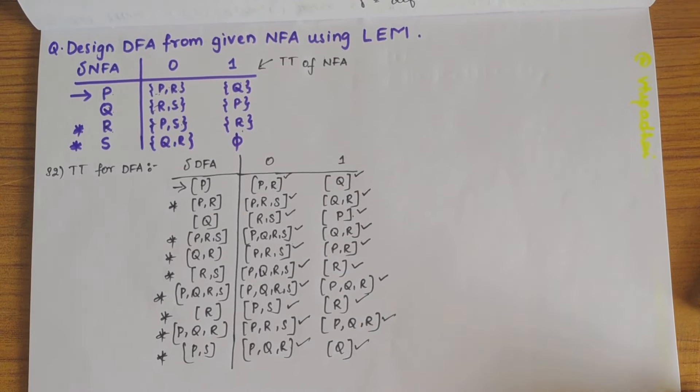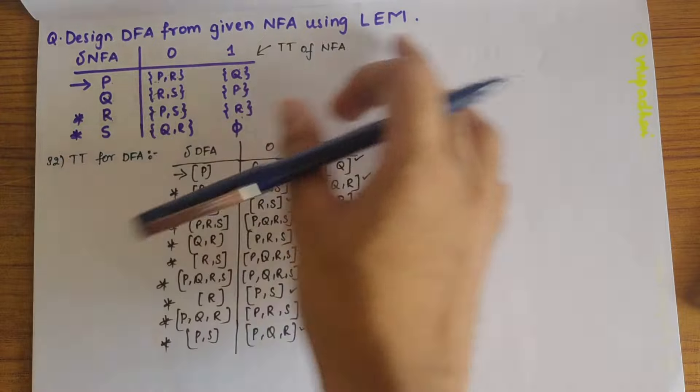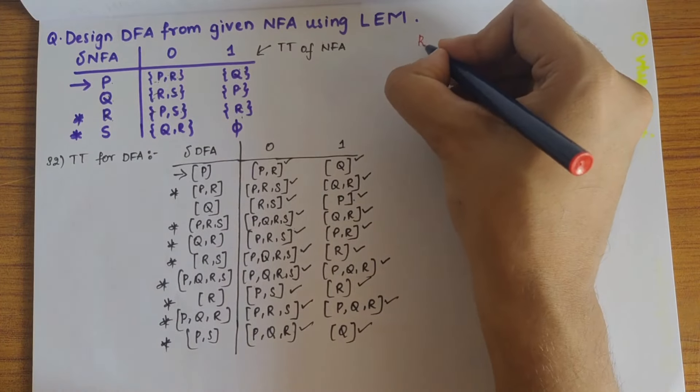So our next step is to draw the transition diagram. So there are two steps. Either draw the transition table diagram of this or rename this and draw a simplified transition diagram. So let's rename it for our simplification.